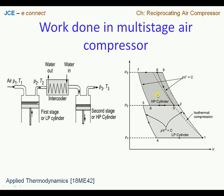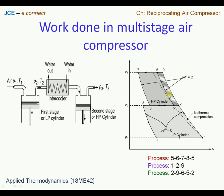The processes from 5 to 6, 6 to 7, 7 to 8, and 8 to 5 signify the cycle for the high pressure cylinder. The process from 1 to 2 and 2 to 9 signifies a continuous compression process if one cylinder were employed. The area bounded by 2 to 9, 9 to 6, 6 to 5, and back to 2 represents the amount of work saved by adopting an intercooler, thereby approaching an isothermal compression process which gives minimum work input.